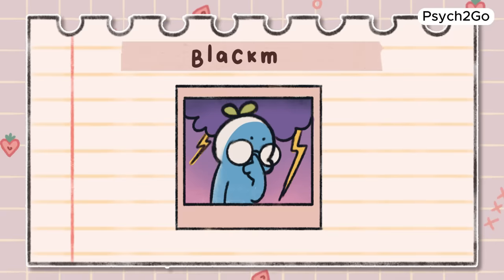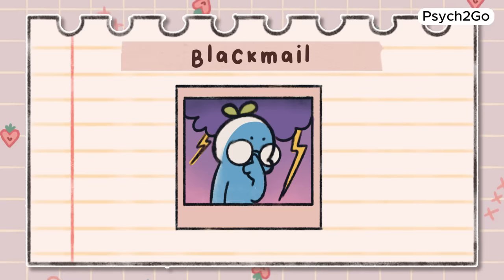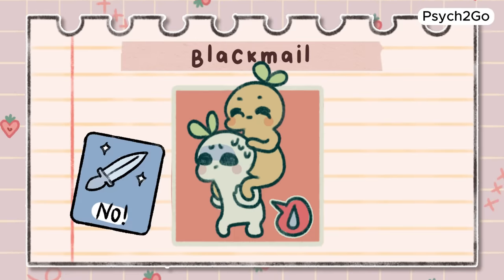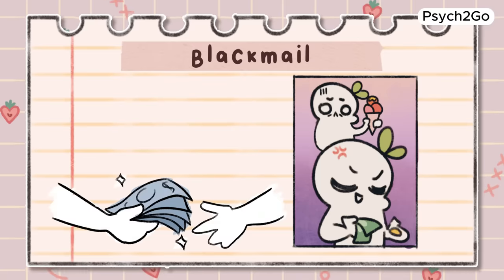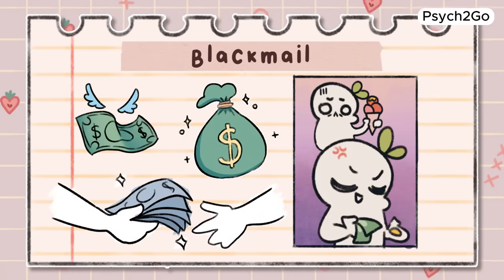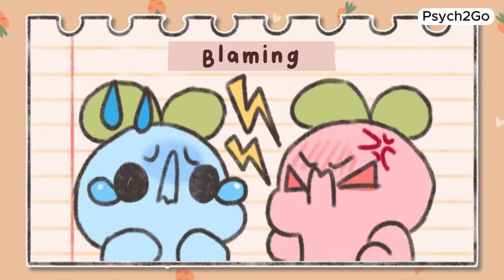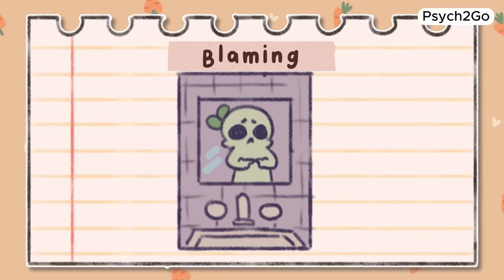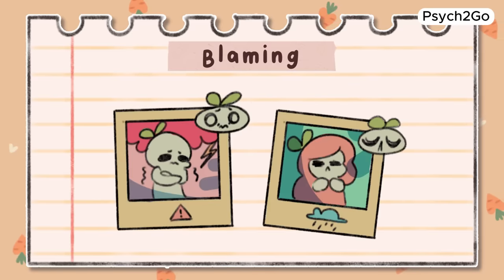Blackmail. Blackmailing is when someone has information or evidence about you that can be used to threaten you into doing something you don't want to do. Blackmail can be a criminal offense in some cases. Blaming. Playing the blame game is a manipulation tactic often used in relationships. If someone is particularly insecure, they may blame you for their mistakes to alleviate their guilt or embarrassment.